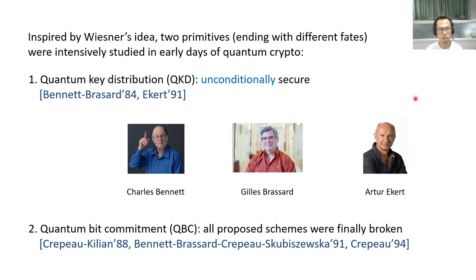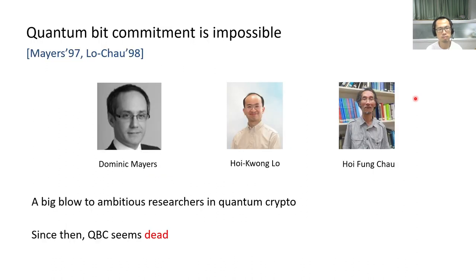The second primitive is quantum bit commitment. There were many proposed schemes; however, all of them were finally broken. The security of QBC is finally settled — in the mid-90s, Mayers and independently Lo and Chau finally proved that quantum bit commitment is impossible. This was a big blow to ambitious researchers in quantum crypto, and since then, QBC seemed dead.